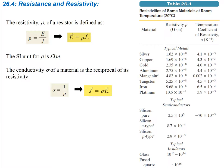Now let's talk about resistivity, which we give the symbol rho. Resistivity is defined as the electric field divided by J, the current density, so E = rho * J. Resistivity is a property of the material itself, not a specific object. For example, the resistivity for copper is about 1.69 × 10⁻⁸.